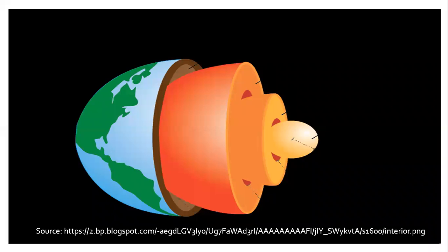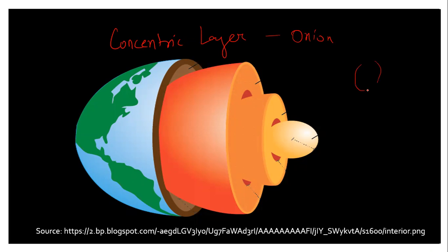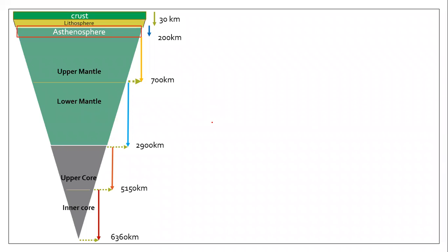One important thing is that our Earth has concentric layers — meaning one layer is above another. You can take the example of an onion. There is a thick outer layer, and you can say that the onion is almost like your Earth in terms of concentric layers, just for your understanding.